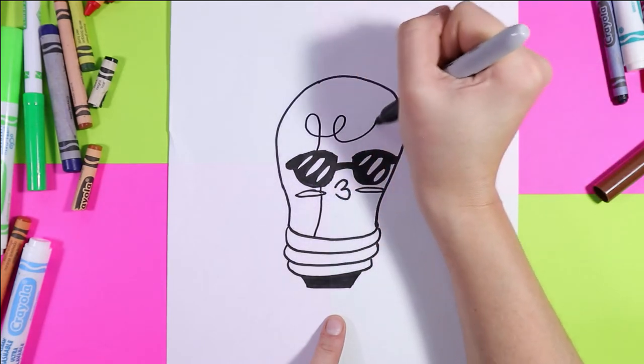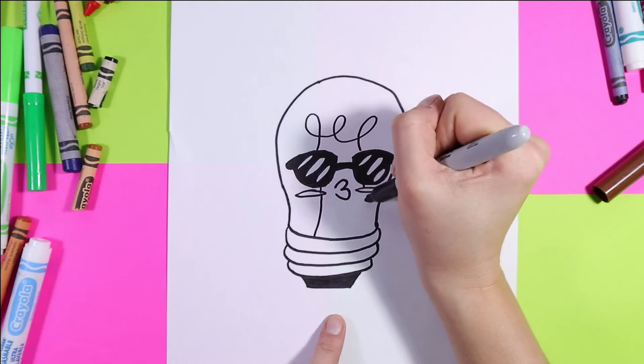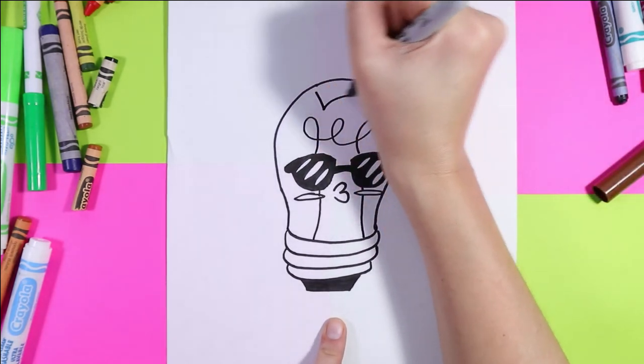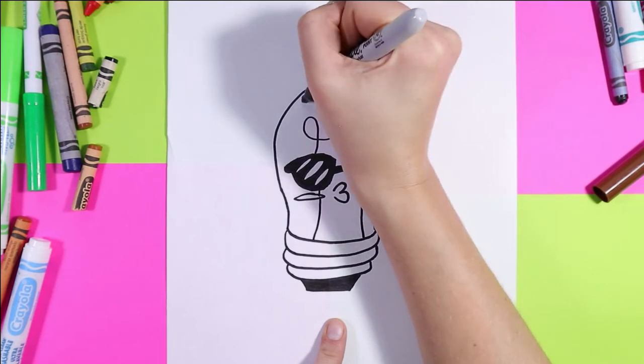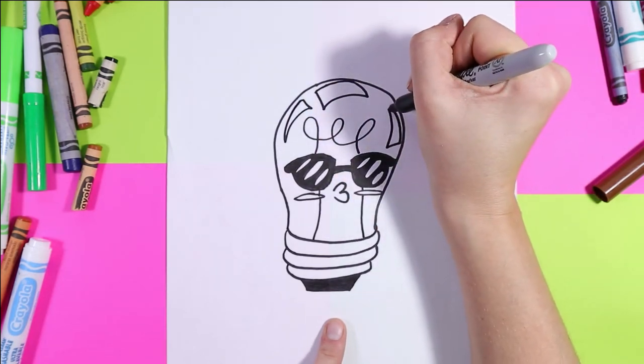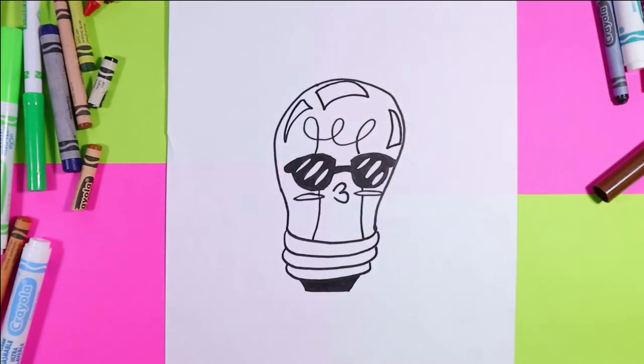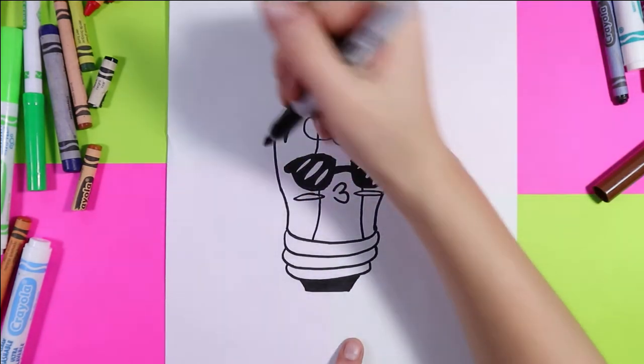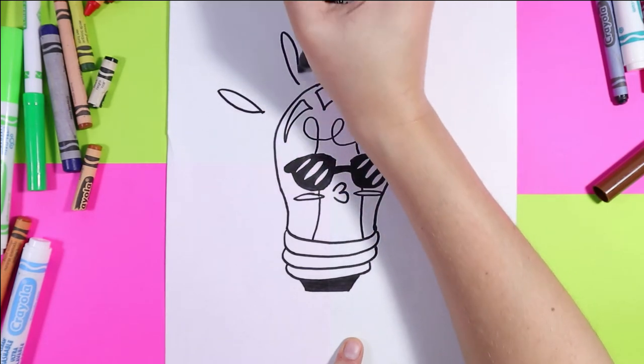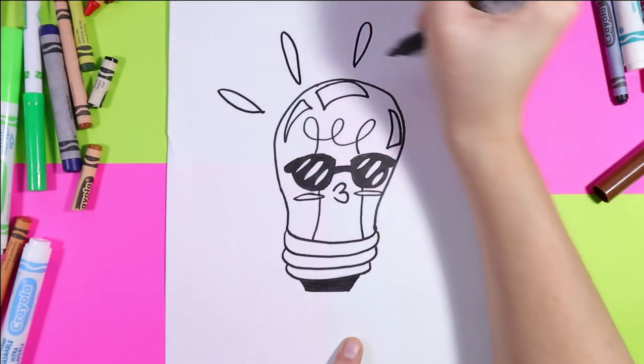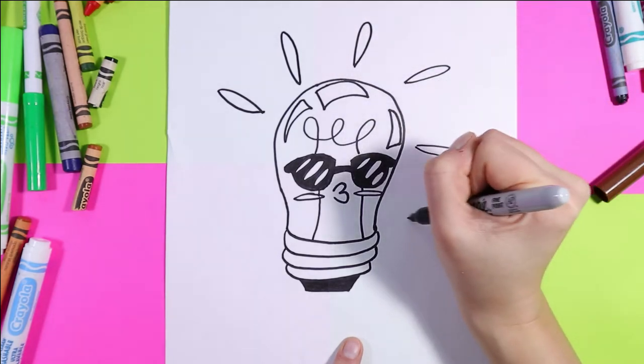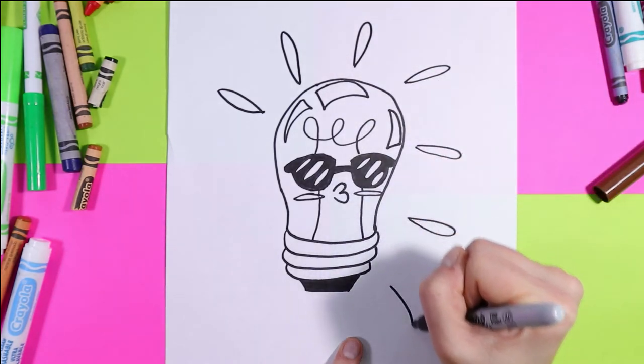Next we're gonna draw the filament inside, so we're gonna go sweep up, do a couple curving lines up and back down. And then we're gonna draw the shiny parts on the glass because of course it's a light bulb. We're gonna add some long skinny lines or ovals around this guy.